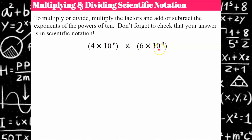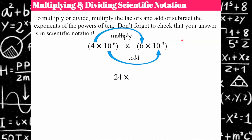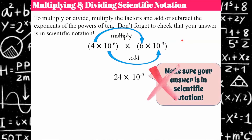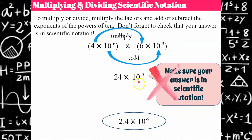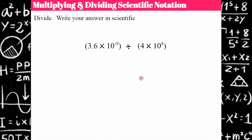When you multiply in scientific notation, you use the product of powers property, and for division, the quotient of powers property. So here, we multiply the factors and get 24, then add the exponents: negative 6 plus negative 3 is negative 9. But 24 times 10 to the negative 9 is not in scientific notation — I have two significant digits to the left of the decimal. So the factor gets smaller by one digit, and the power of 10 gets larger by one: negative 8 is one larger than negative 9.